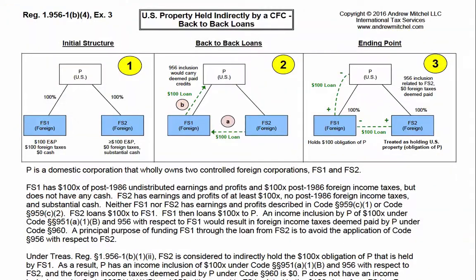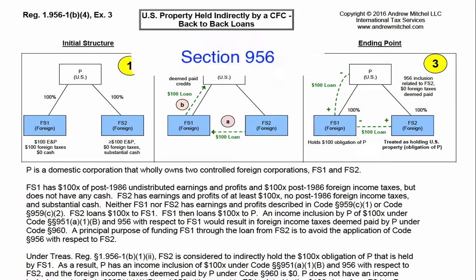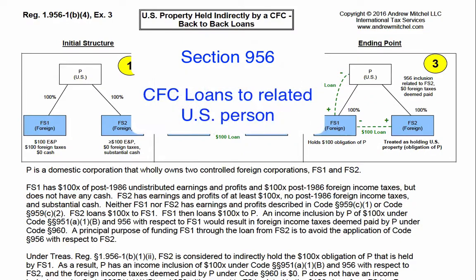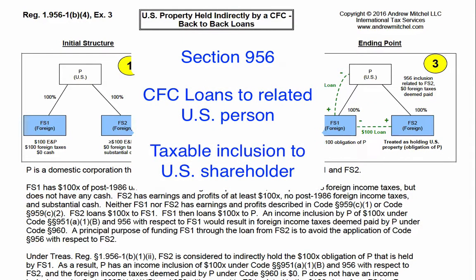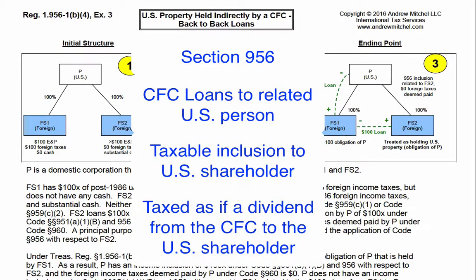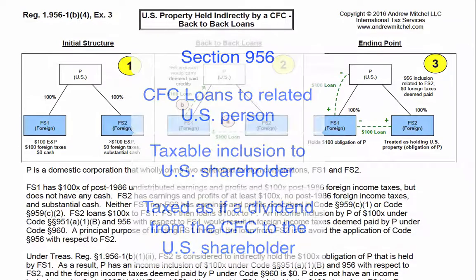Generally, the proceeds of a loan do not constitute income to the borrower because the benefit is offset by an obligation to repay. However, under Section 956, when a CFC loans money to a related U.S. person, the loan is treated as a taxable inclusion to the U.S. shareholder of the CFC. The 956 inclusion is taxed as if the CFC had paid a dividend to the U.S. shareholder of the CFC.